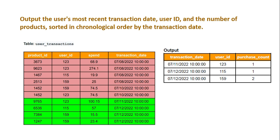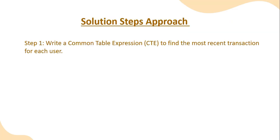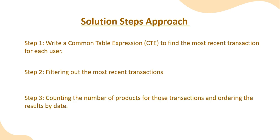Now let's outline the steps to write a SQL query to get the expected output — you can pause here and think through your approach. First, we'll write a CTE to find the most recent transaction date for each user. Second, we'll filter out only those most recent transaction dates. Third, we'll count the number of products for those transactions and order the results by date in chronological order.